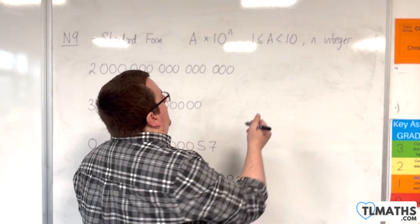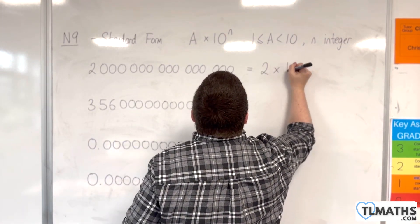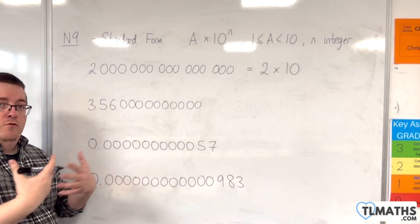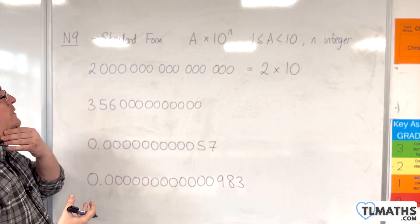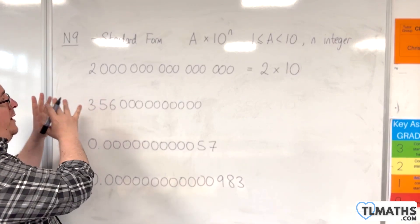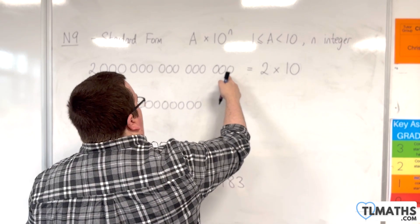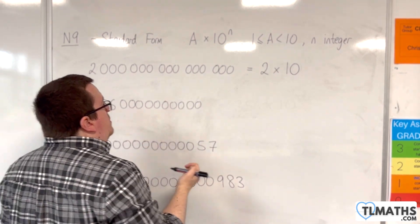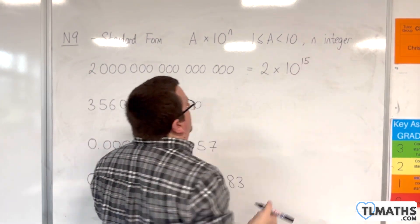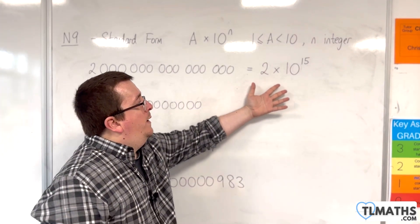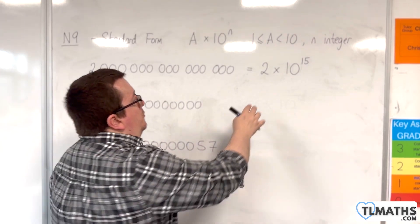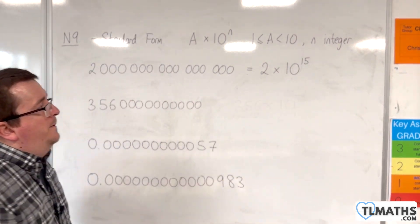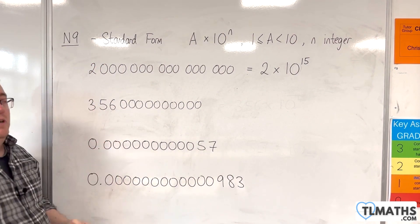Let's take a look at this first one. The idea here is that I can write this as 2 times 10 to the something. We've worked through multiplying by 10 and powers of 10, so we could just count the zeros here: 1, 2, 3, 4, 5, 6, 7, 8, 9, 10, 11, 12, 13, 14, 15. We've got 15 zeros, so it must be 2 times 10 to the 15. And that is now in standard form. The number at the front, the 2, is between 1 and 10, and 15 is an integer. So this can be written nice and succinctly as 2 times 10 to the 15.